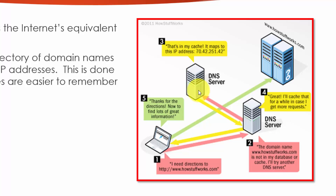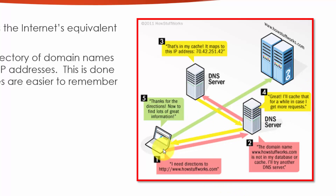So it transitions to this DNS server. This DNS server says that's in my cache. It maps to this IP address, 7040225142. It goes back to the DNS server. The DNS server says great, I'll cache that for a while in case I get more requests.